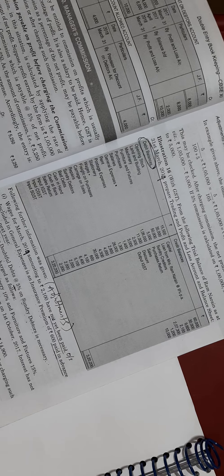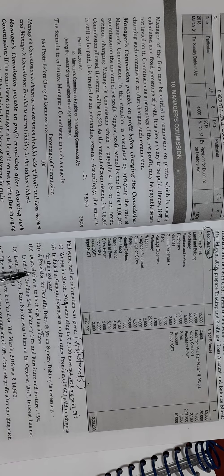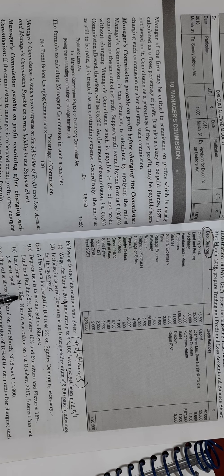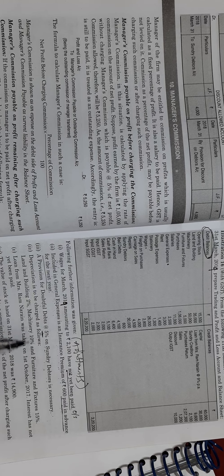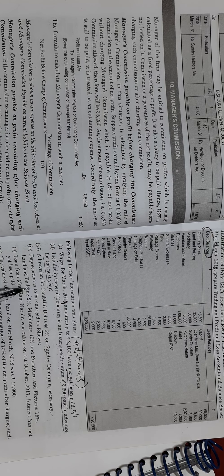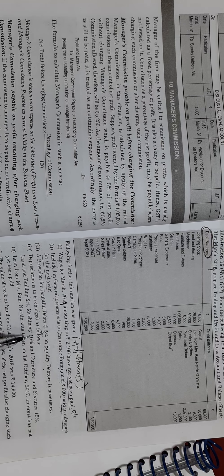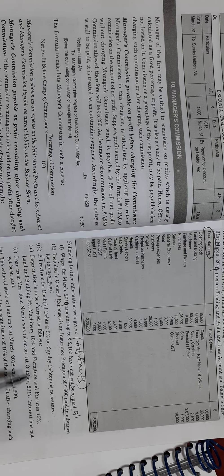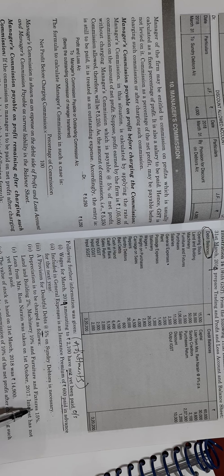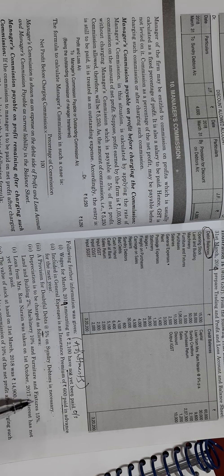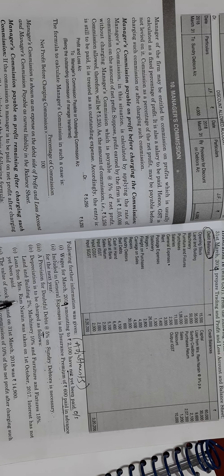Depreciation: if given in the adjustments, it appears on the debit side of the profit and loss account, and the same depreciation is deducted from the concerned asset in the balance sheet. For example, depreciation on land and building is deducted from land and building in the balance sheet. Machinery at 10% depreciation appears in the profit and loss account, and 10% is deducted from machinery in the balance sheet.